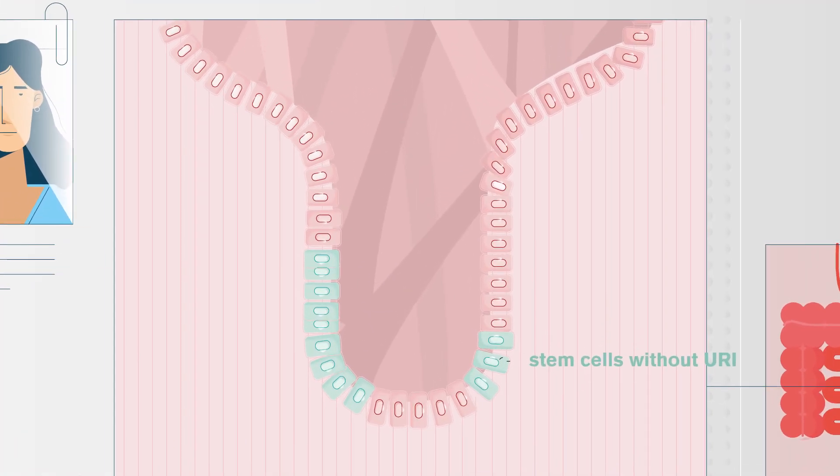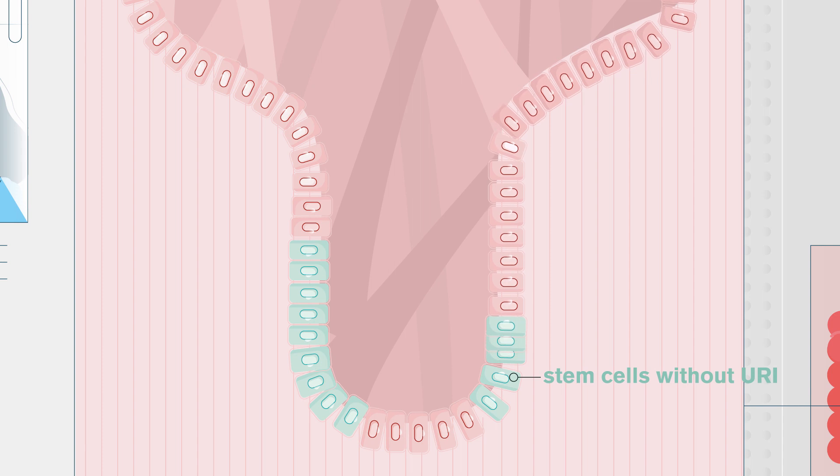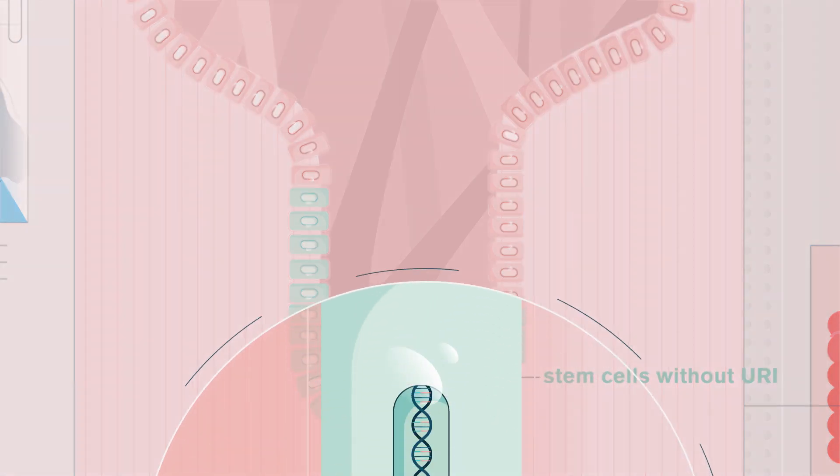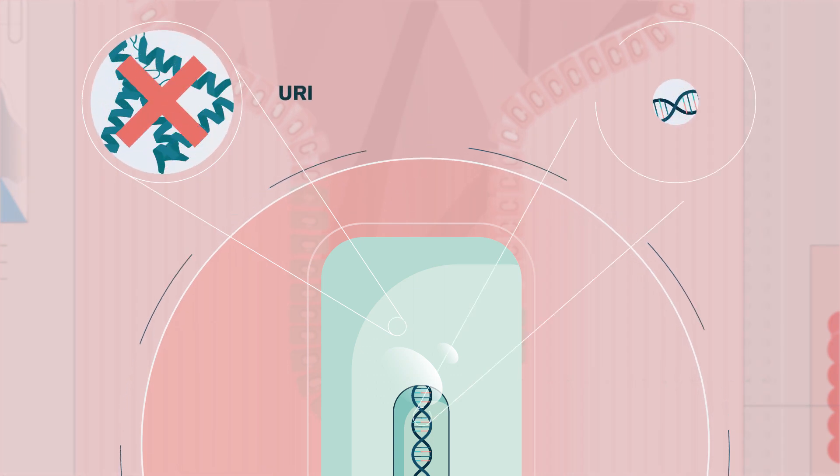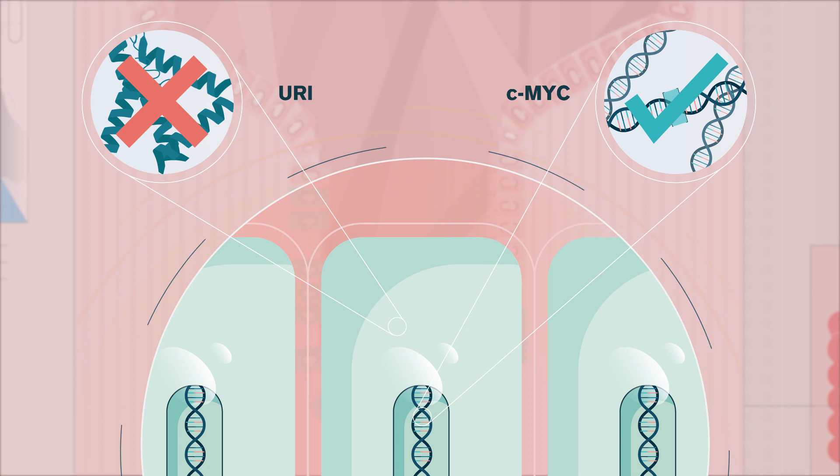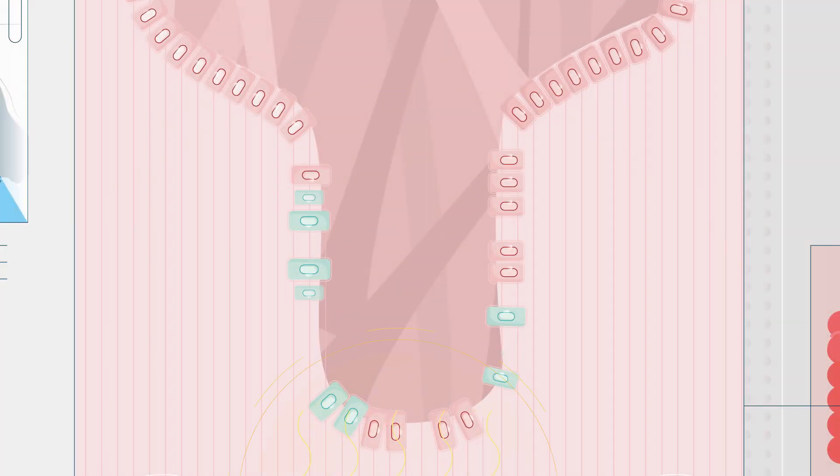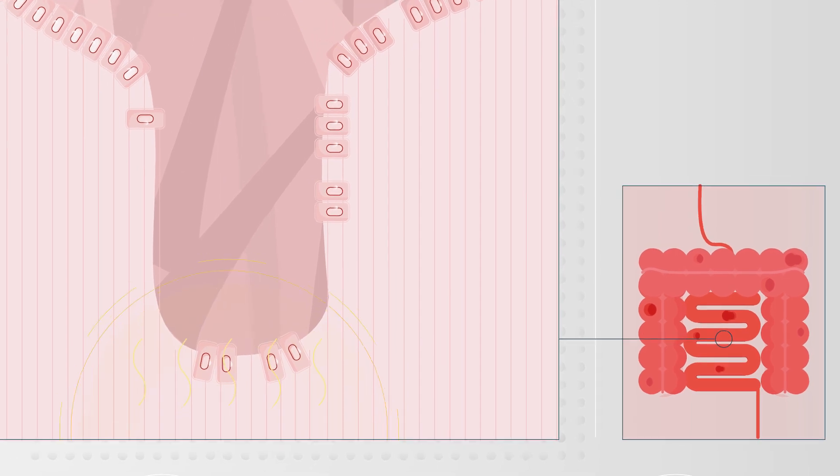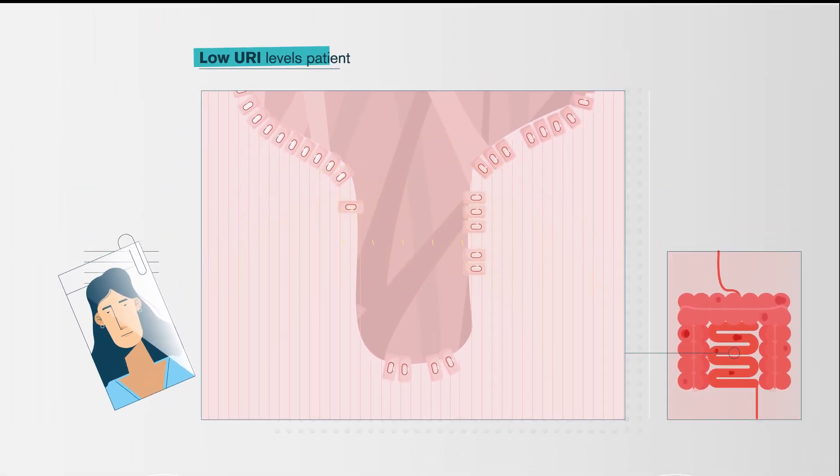However, the levels of URI can be lower in some people or reduced due to chronic irradiation, where intestinal regeneration is constantly active to repair the damage. Due to low URI levels, dormant cells have high levels of CMYK and are forced to constantly divide, rendering them more vulnerable to the intensive radiation and leading to their death. Consequently, the intestine cannot regenerate and is destroyed.